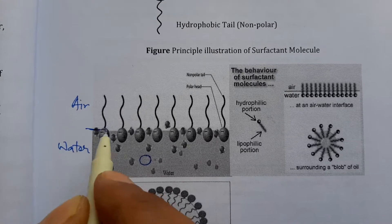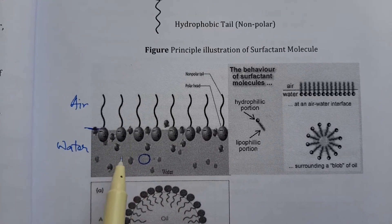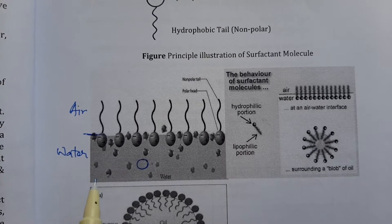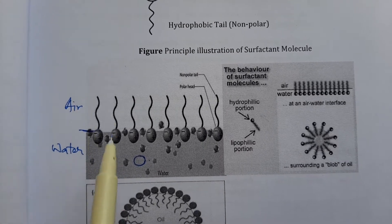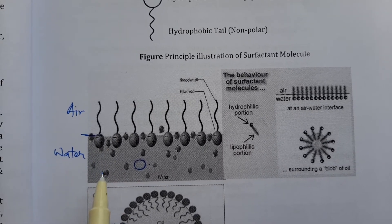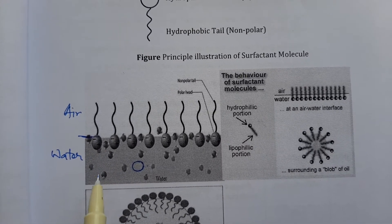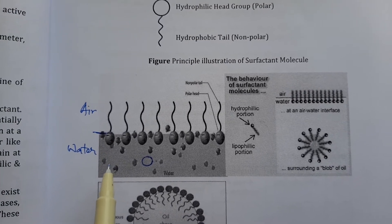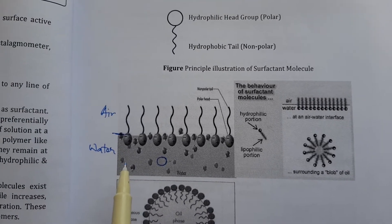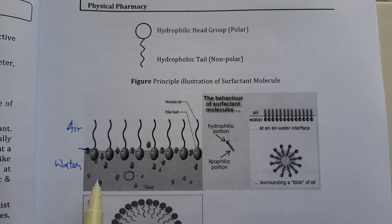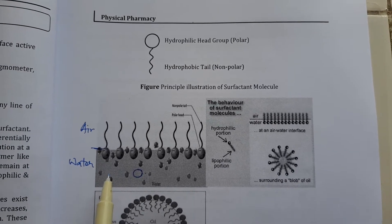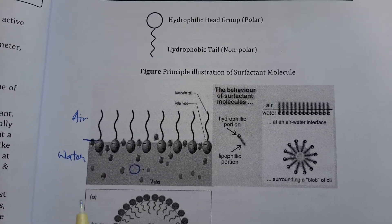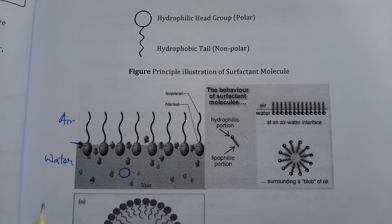This boundary between air and water is known as the air-water interface. Now I have added some surfactant. What is the meaning of surfactant? Surfactant means surface active agent, which decreases the surface tension of water. That which decreases the surface tension of water is known as a surfactant or surface active agent.